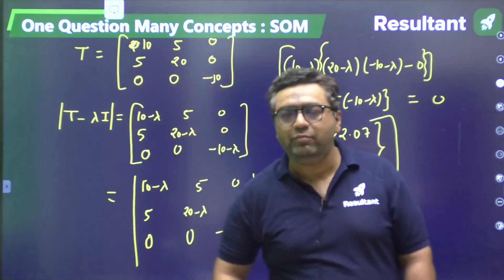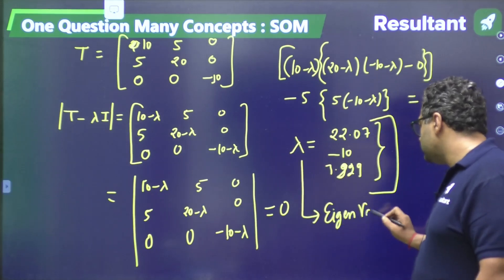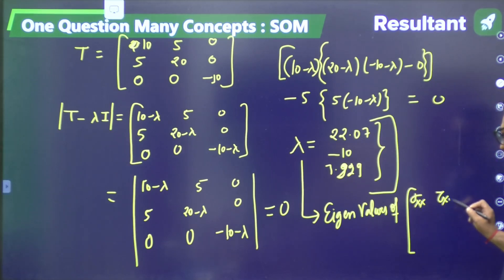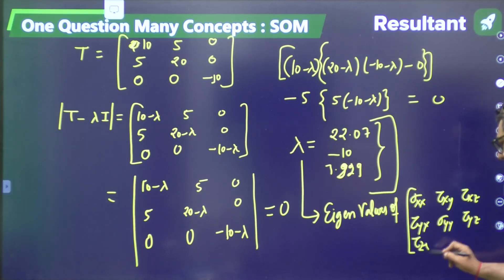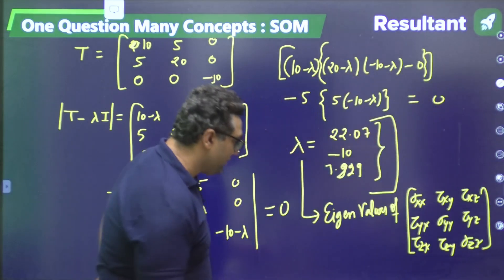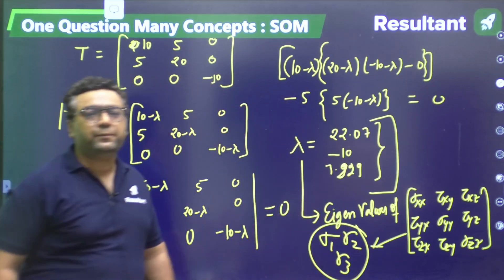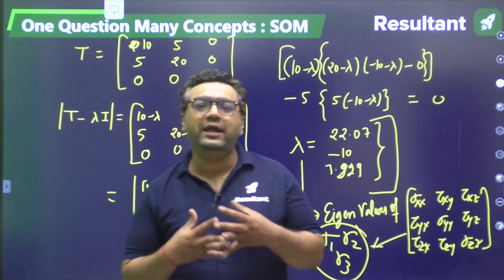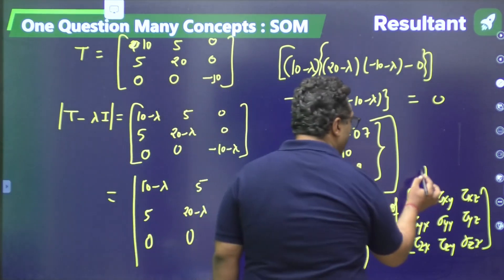This one question covered many concepts. Most importantly: the eigenvalues of the Cauchy stress tensor — written as [sigma_xx, tau_xy, tau_xz; tau_yx, sigma_yy, tau_yz; tau_zx, tau_zy, sigma_zz] — give the principal stresses sigma_1, sigma_2, sigma_3. This is the most beautiful concept from this question. That is why the heading was 'One Question, Many Concepts.'